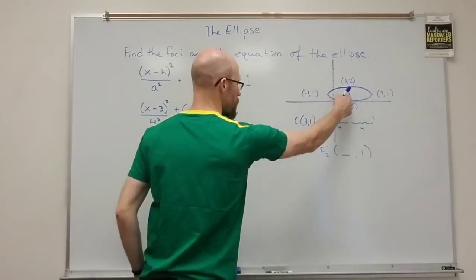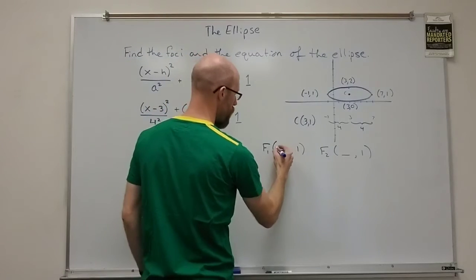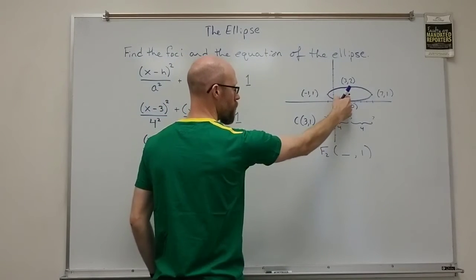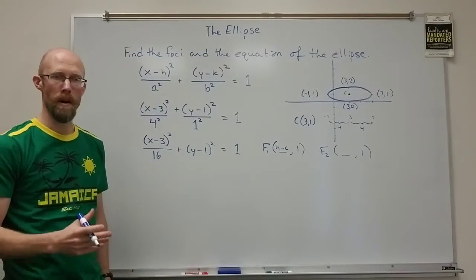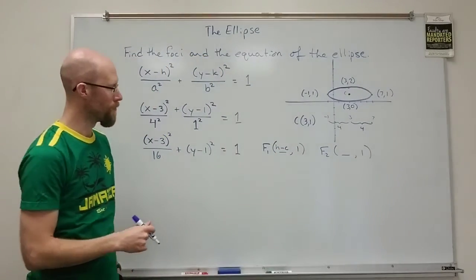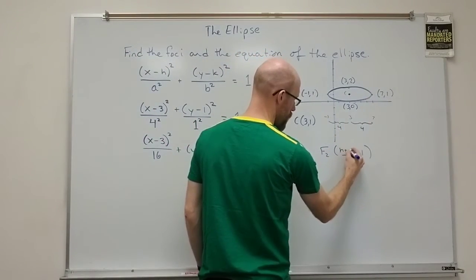And so we want to take the the h which is the x coordinate of the of the center and subtract off little c. We'll come back to how we calculate little c in a moment. And then for the other one we're going to add the little c so it's h plus c.